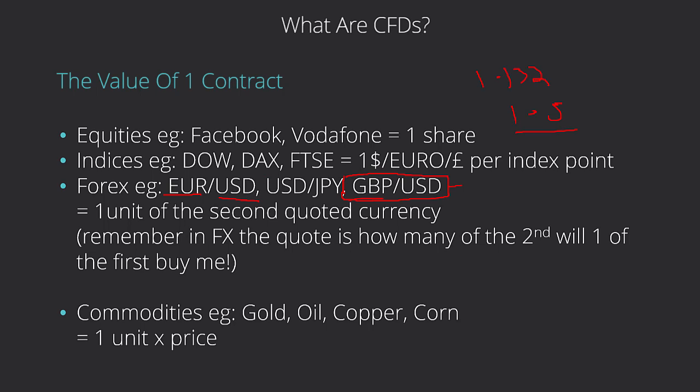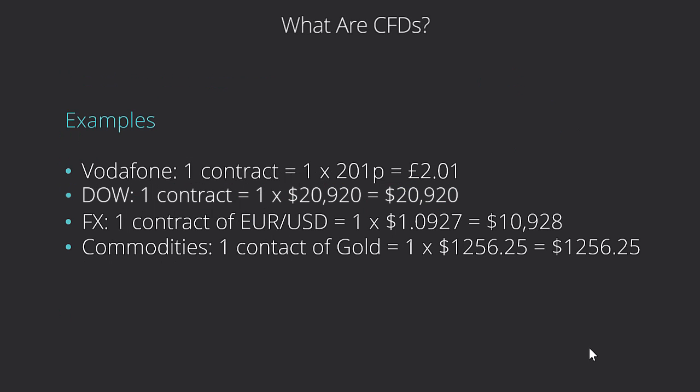Let's look at these quick examples. Vodafone: one contract equals one times 201, so it's going to be two pounds and one penny — just like buying one share. The Dow: one contract is going to have a notional value of twenty thousand, nine hundred and twenty dollars because that's the index value. EUR/USD: one contract is going to be worth one point oh nine two seven, which comes to ten thousand nine hundred and twenty-eight dollars.